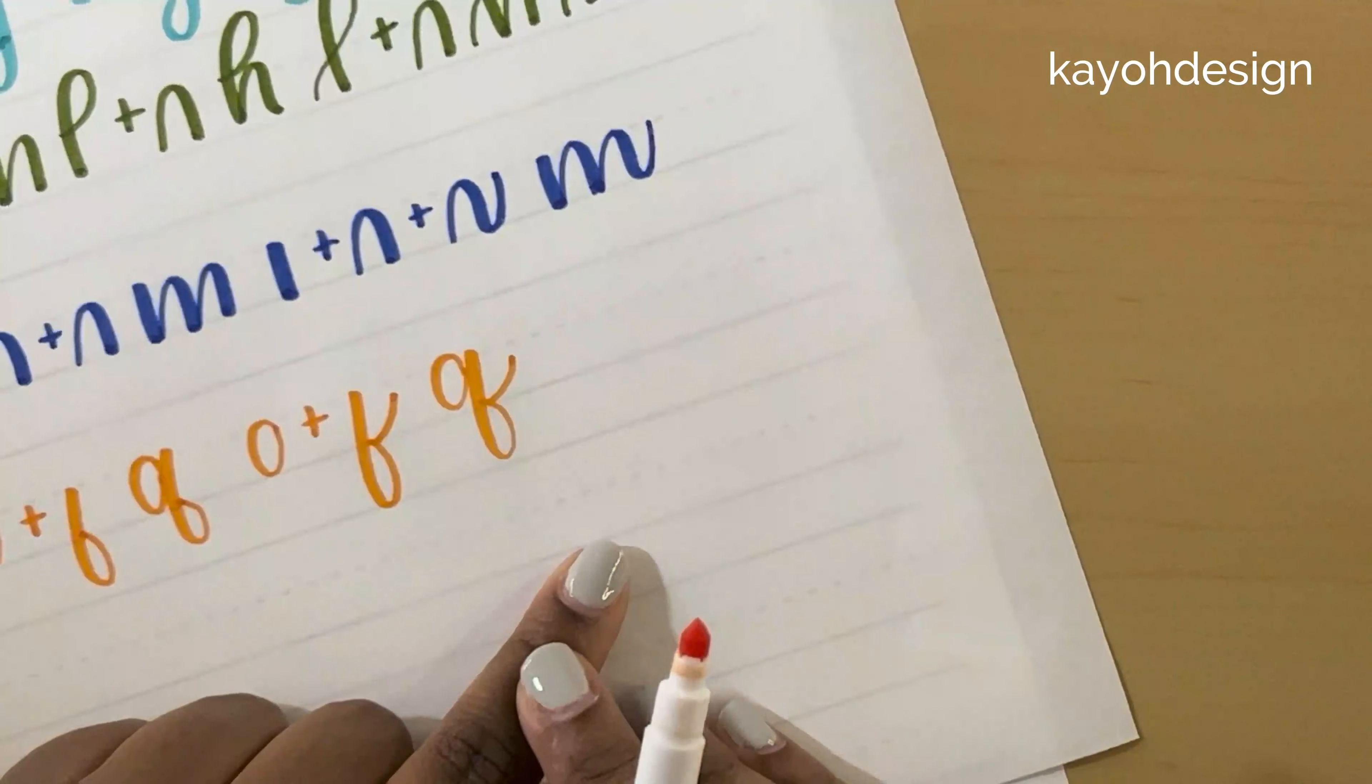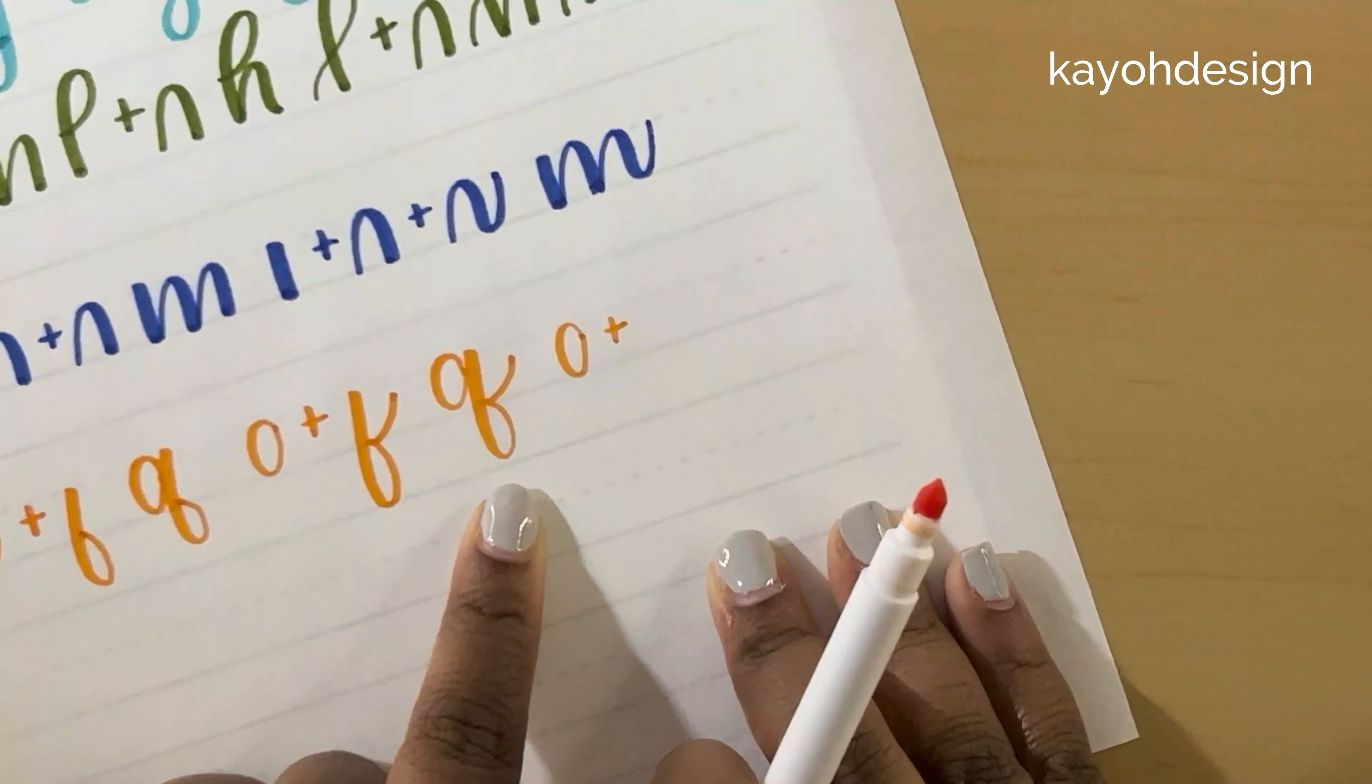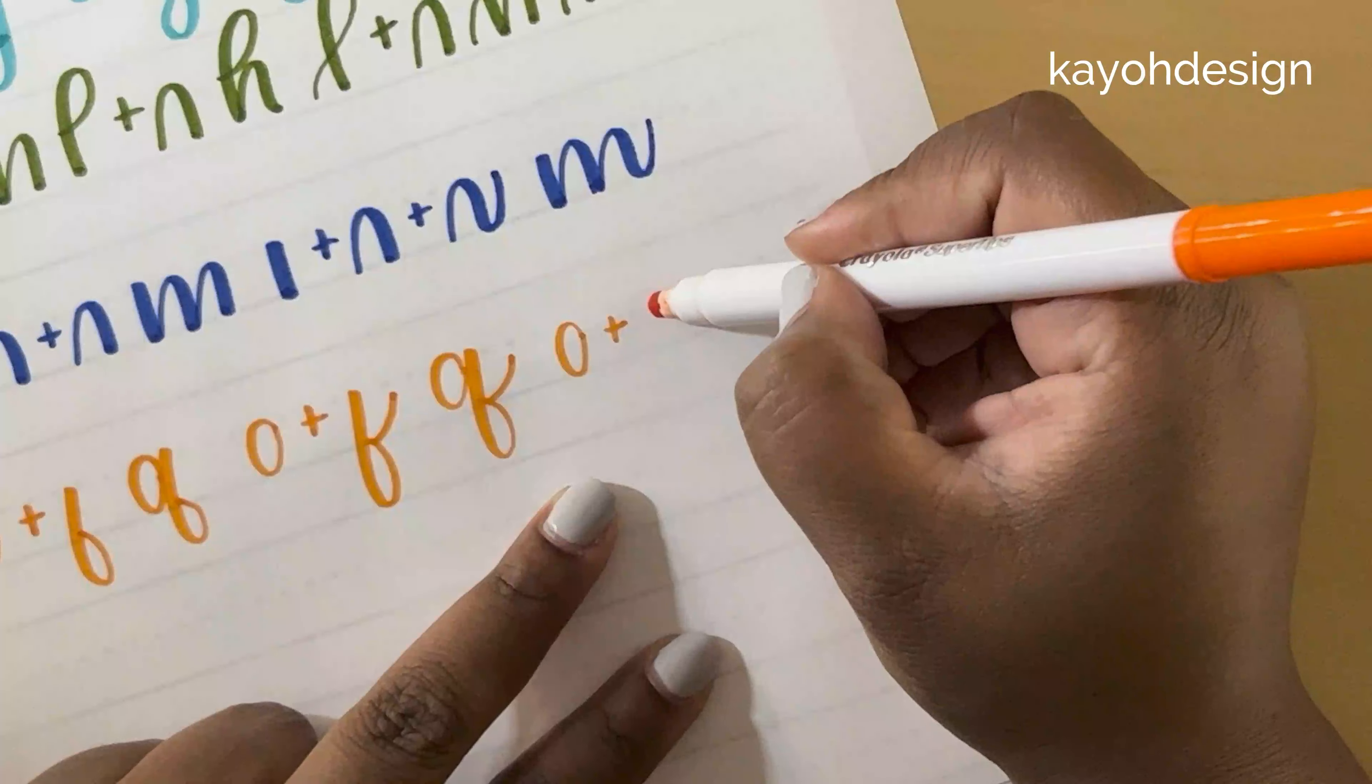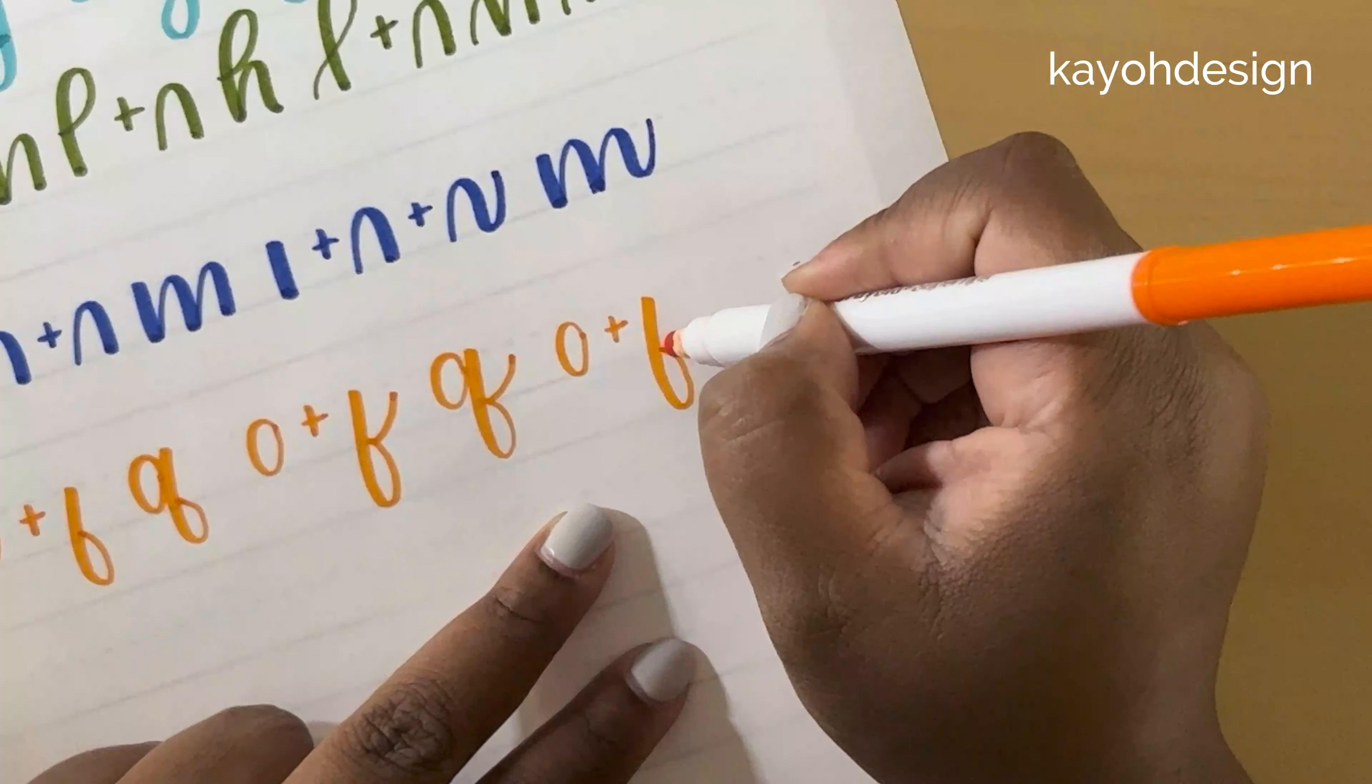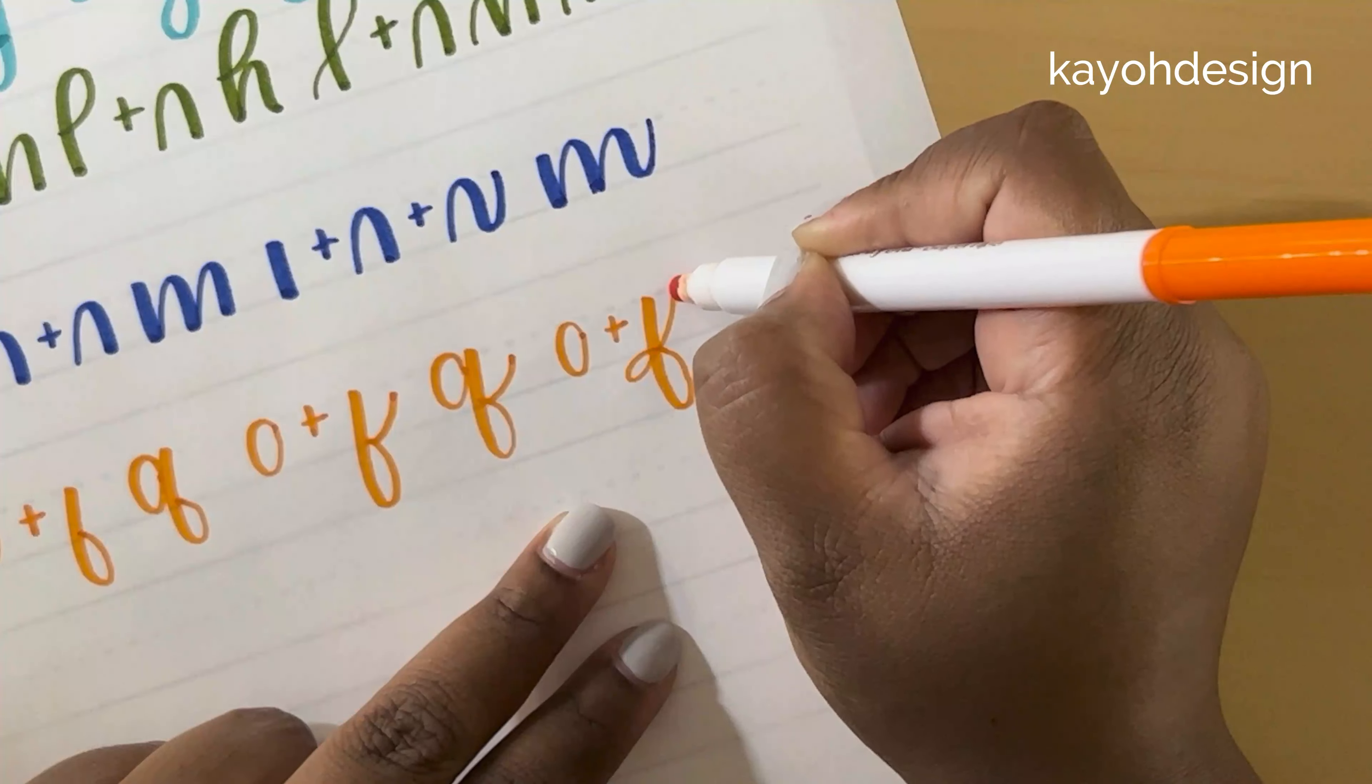Okay, and one more way that you can draw a Q, again, is with the oval plus, it's this loop here, but it's fancier. So down, around, and once you meet here at the center point of the descender, you go through it and make a small loop and come back up.